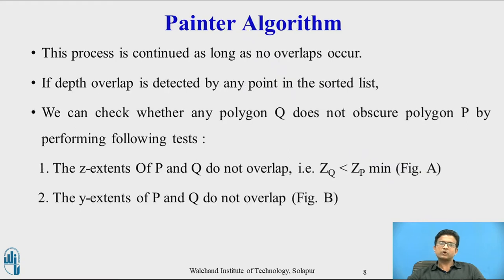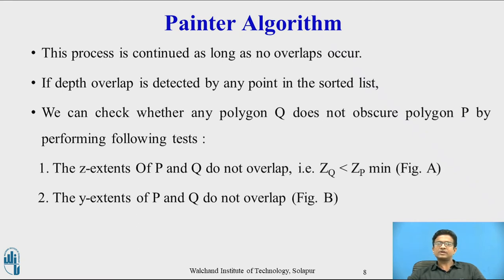This process is continued as long as there is no overlap between two polygons. If depth overlap is detected at any point in the sorted list, we have to make some additional comparisons to determine whether any of the polygons should be reordered.